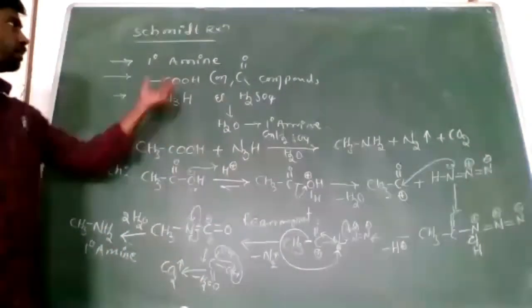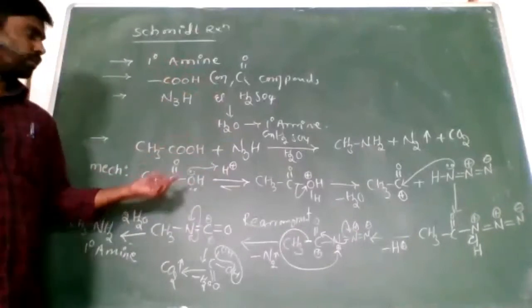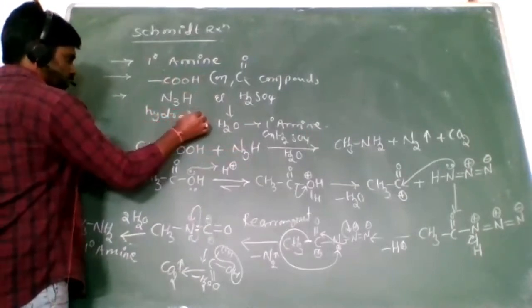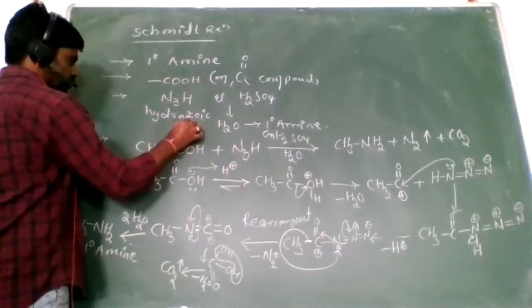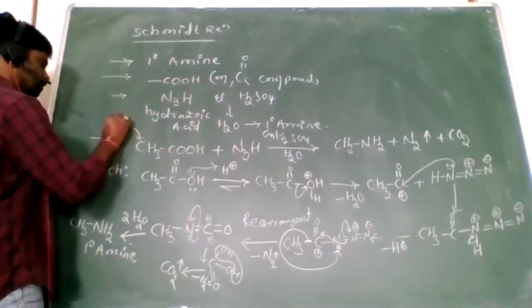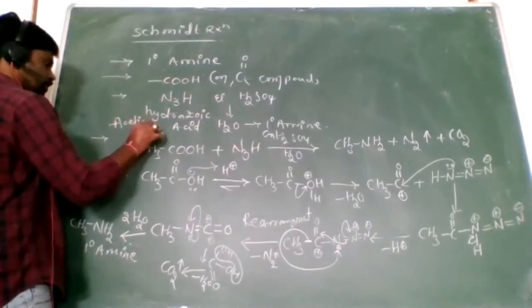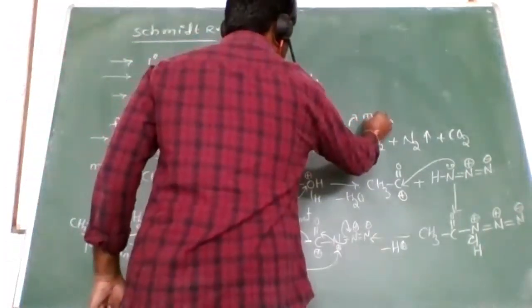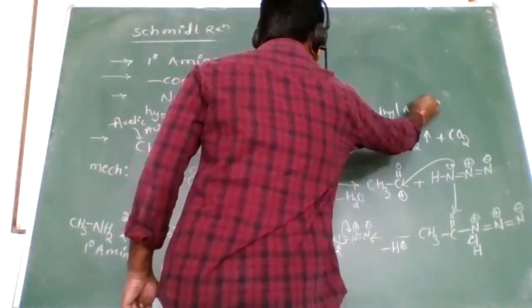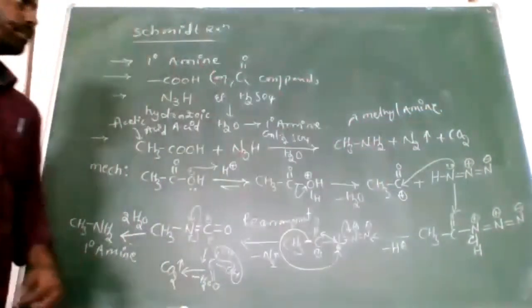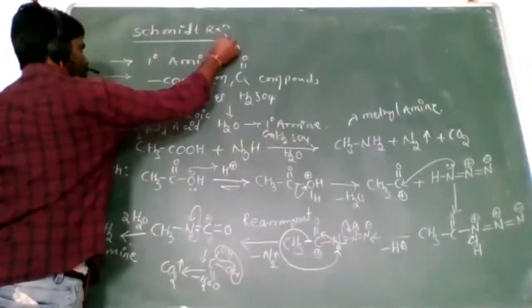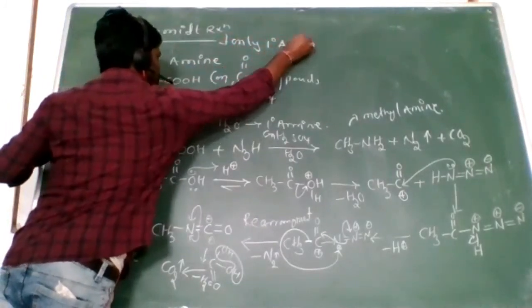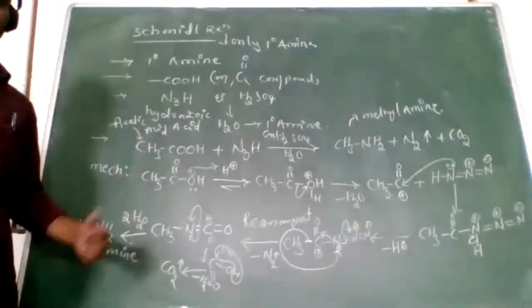So this is the Schmidt reaction. Carboxylic acid — here acetic acid — reacts with hydrazoic acid, and we get only primary amines. Write it down. Are we clear? Right.